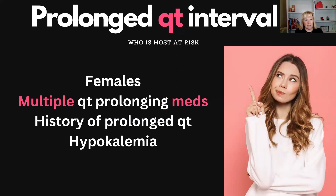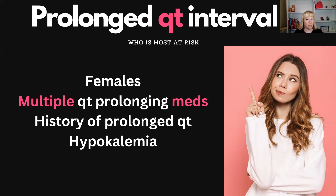We've talked about the length that makes someone at risk, but there are also other risk factors. Females have a higher risk of going into torsades with a prolonged QT. Add that to someone being on multiple QT-prolonging meds — that's when you really get in trouble. The risk keeps climbing. If they have hypokalemia, definitely bank on having a prolonged QT. So hypokalemia from vomiting, for example, and then if they're female and on multiple QT-prolonging medications — let's say they're on Zofran, on Elavil, maybe on an antibiotic — that's definitely someone who's primed for this to happen, especially if they have a history of a prolonged QT interval.